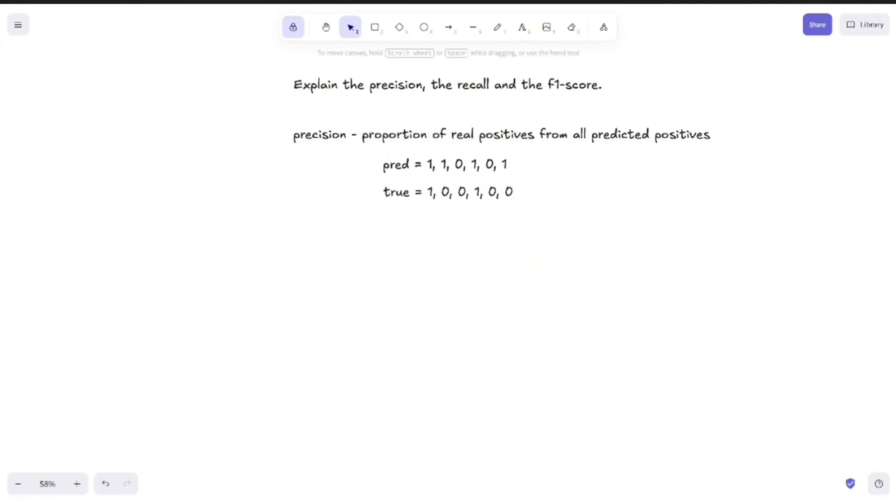And how is this calculated? Well, the precision is calculated as the number of true positives divided by the number of false positives, which in our case would be 2 divided by 2 plus 2. So 2 divided by 4, which is 0.5. So this example has a precision of 0.5.